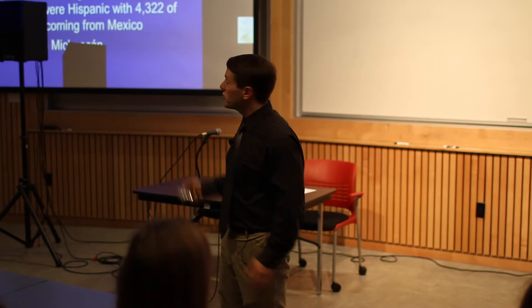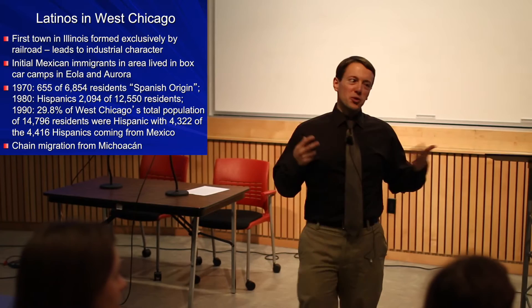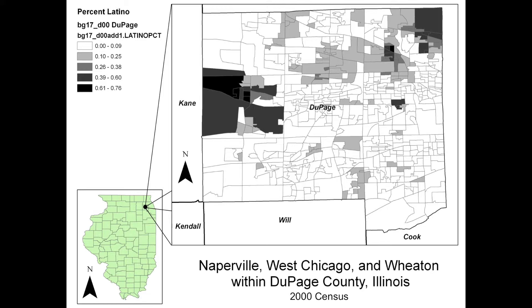Not all suburbs look like this. When you walk outside Wheaton's boundaries you don't have to go far to find really different communities. West Chicago is about five miles west — take the train two stops. It's a different kind of town, built around the railroad, much more about manufacturing, and it has a large Latino presence. Looking at Latinos in DuPage County by census tract, there's a major cluster on the left side — that's West Chicago, with some tracts 16 to 75% Latino.